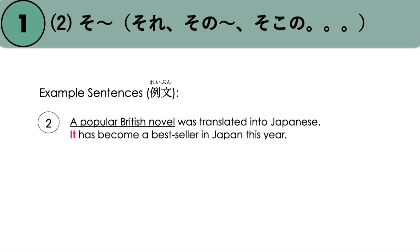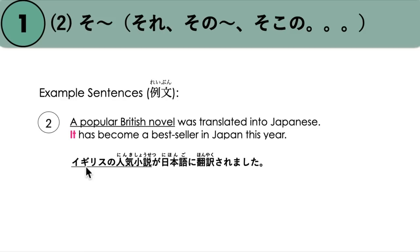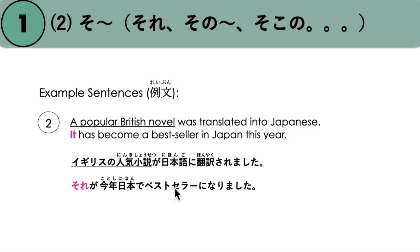Another written form example: 'A popular British novel was translated into Japanese. It has become a bestseller in Japan this year.' We have the noun 'a popular British novel', and we use 'it' as a demonstrative pronoun to replace it. Igirisu no ninki shoseki ga nihongo ni hon'yaku saremashita. Sore ga kotoshi nihon de besutoseraa ni narimashita.